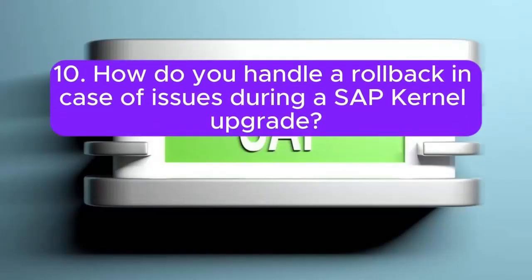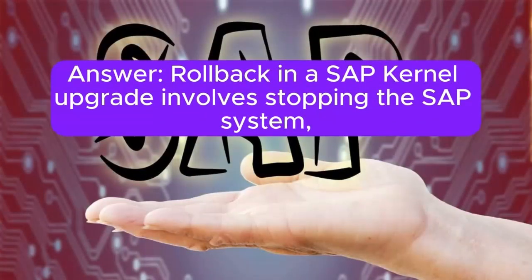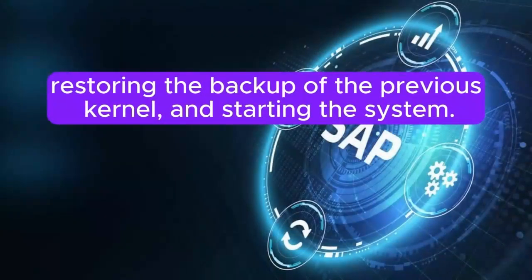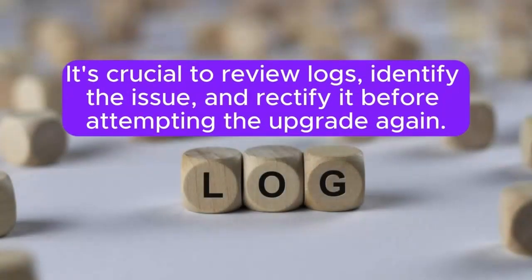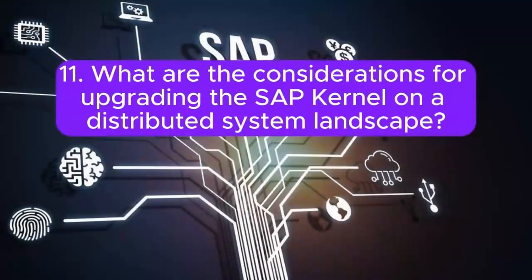10. How do you handle a rollback in case of issues during a SAP kernel upgrade? Rollback in a SAP kernel upgrade involves stopping the SAP system, restoring the backup of the previous kernel, and starting the system. It's crucial to review logs, identify the issue, and rectify it before attempting the upgrade again.